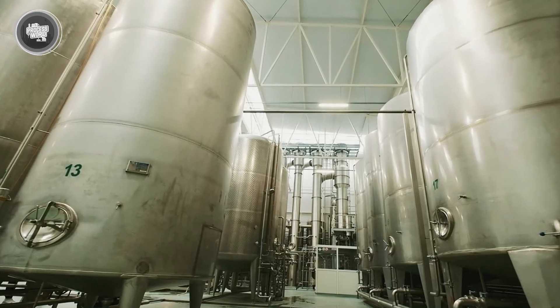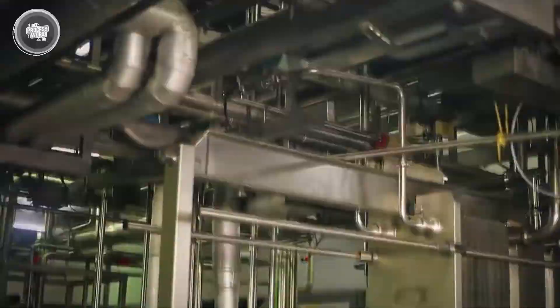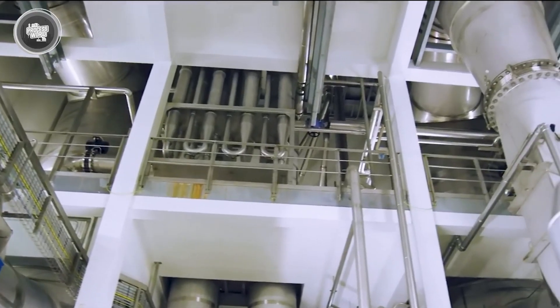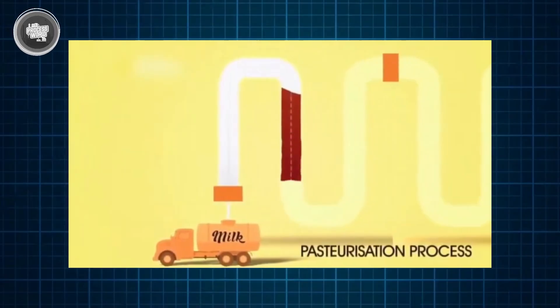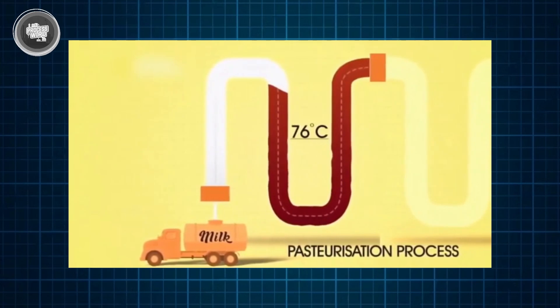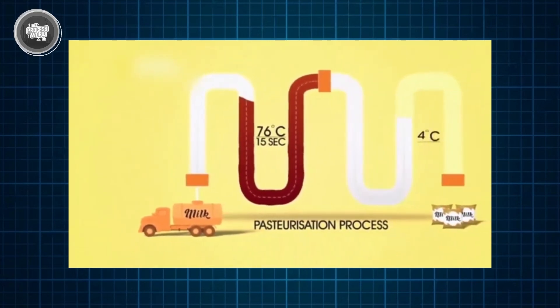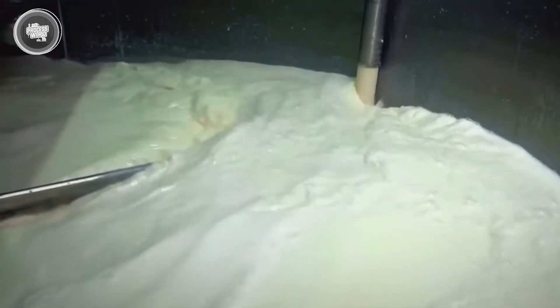The next step is just as important. As soon as the 15 seconds are up, the milk is rapidly cooled down to 4 degrees Celsius. This sudden drop in temperature stops any remaining bacteria from multiplying and keeps the milk fresh. This method, known as high-temperature short-time pasteurization, is widely used because it keeps the milk's natural flavor and nutrients while making it safe for consumption. Once the milk is pasteurized, it moves to the next stage, separating the fat to prepare it for drying.